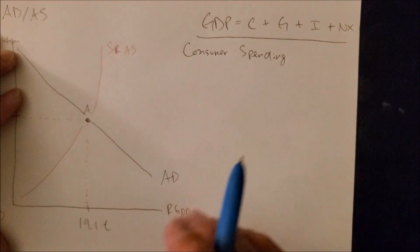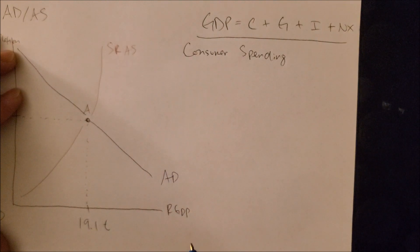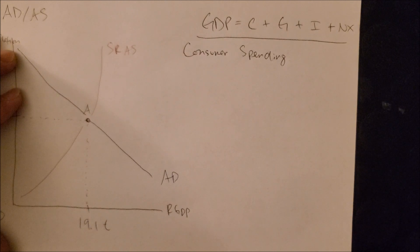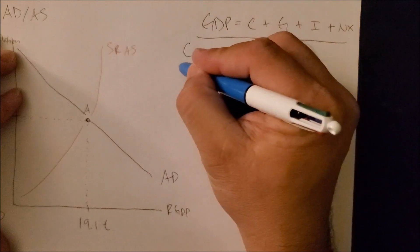Now for consumer spending, there are many types of factors that would shift AD either to the right or to the left. But to keep things consistent, we are going to focus on AD shifting to the right. Number one focuses on income.